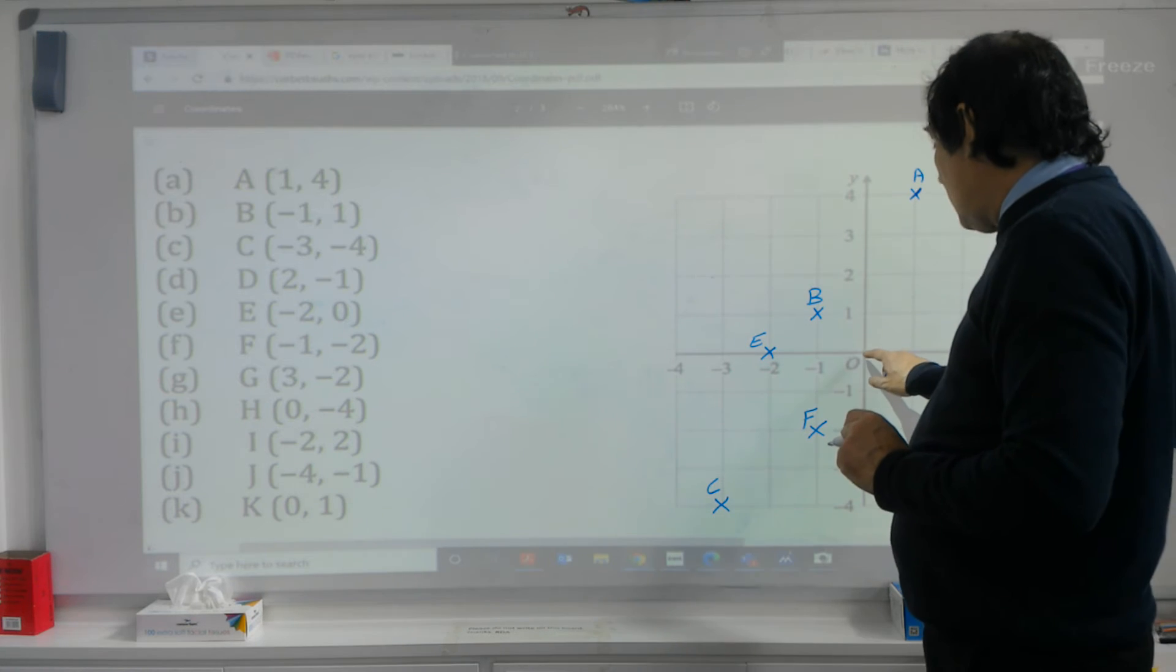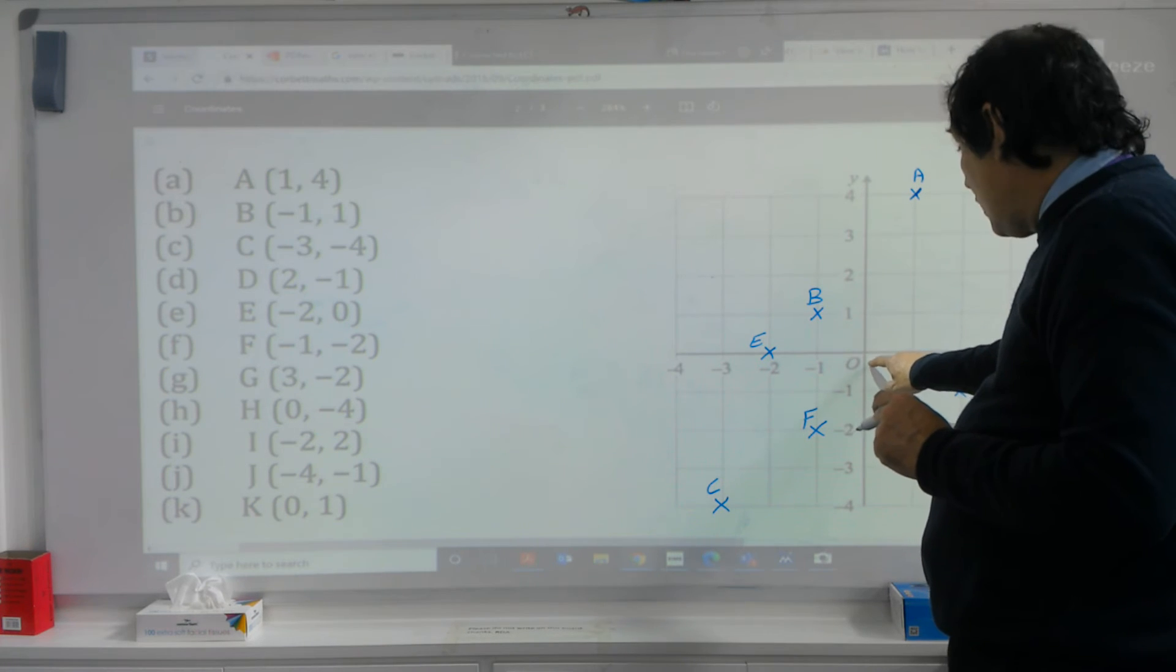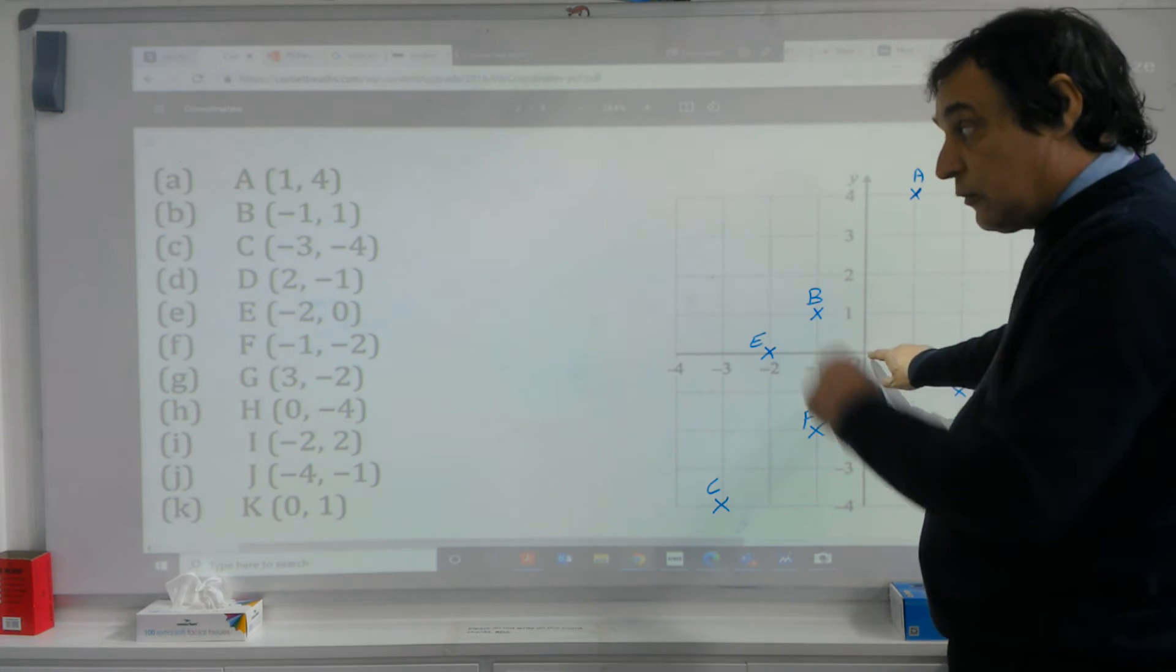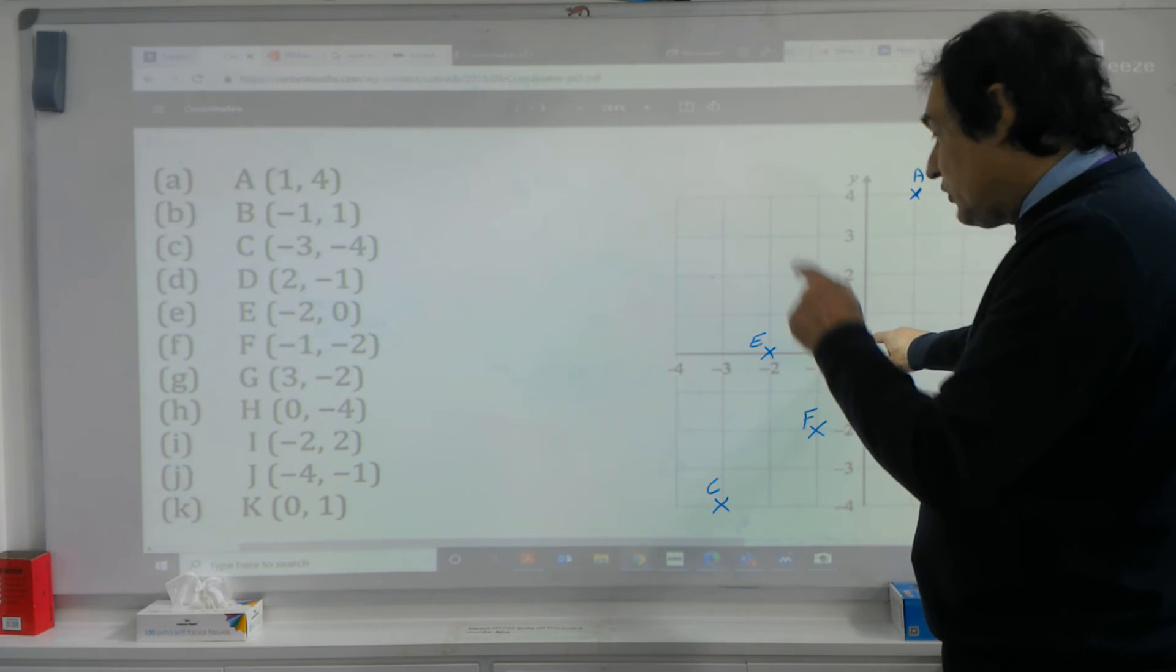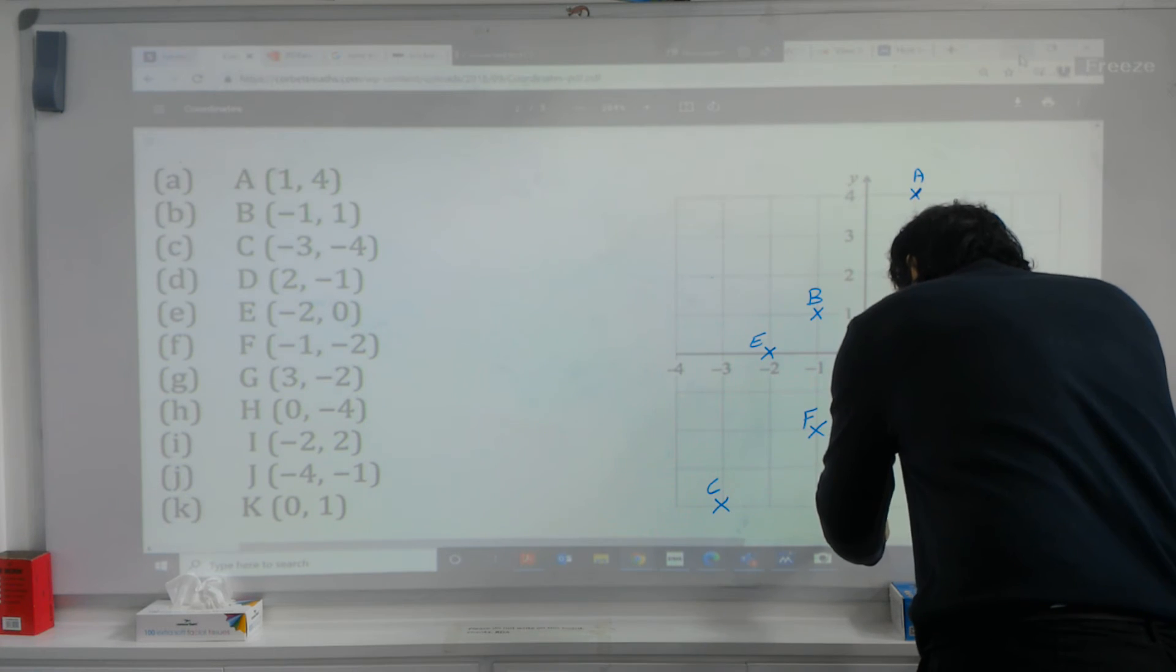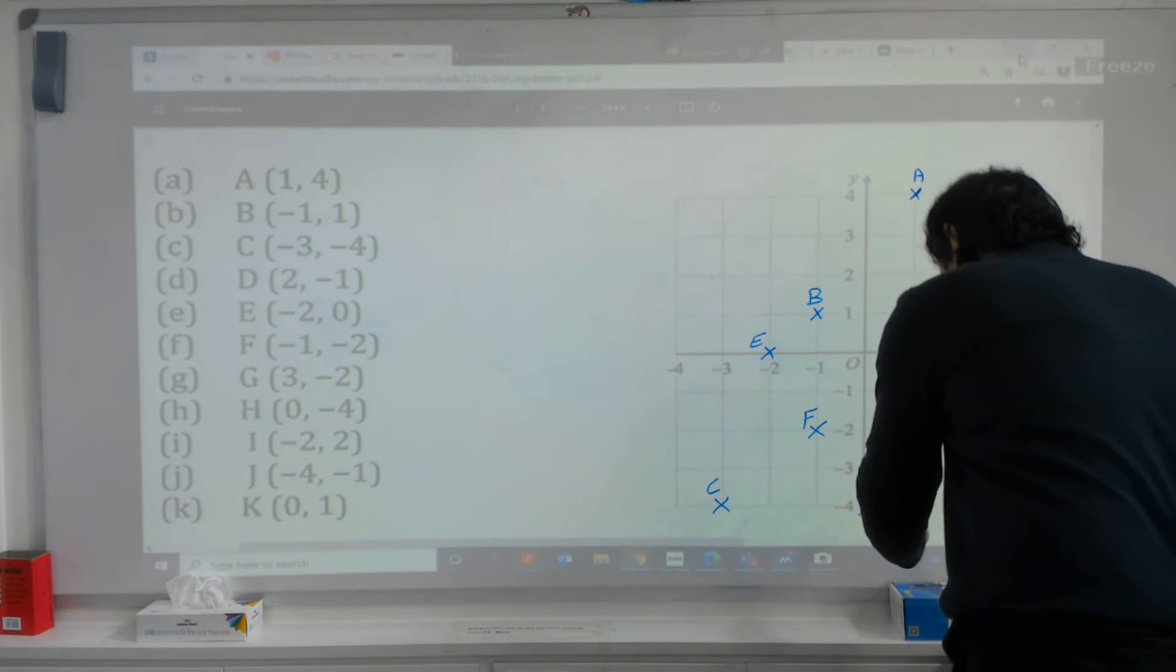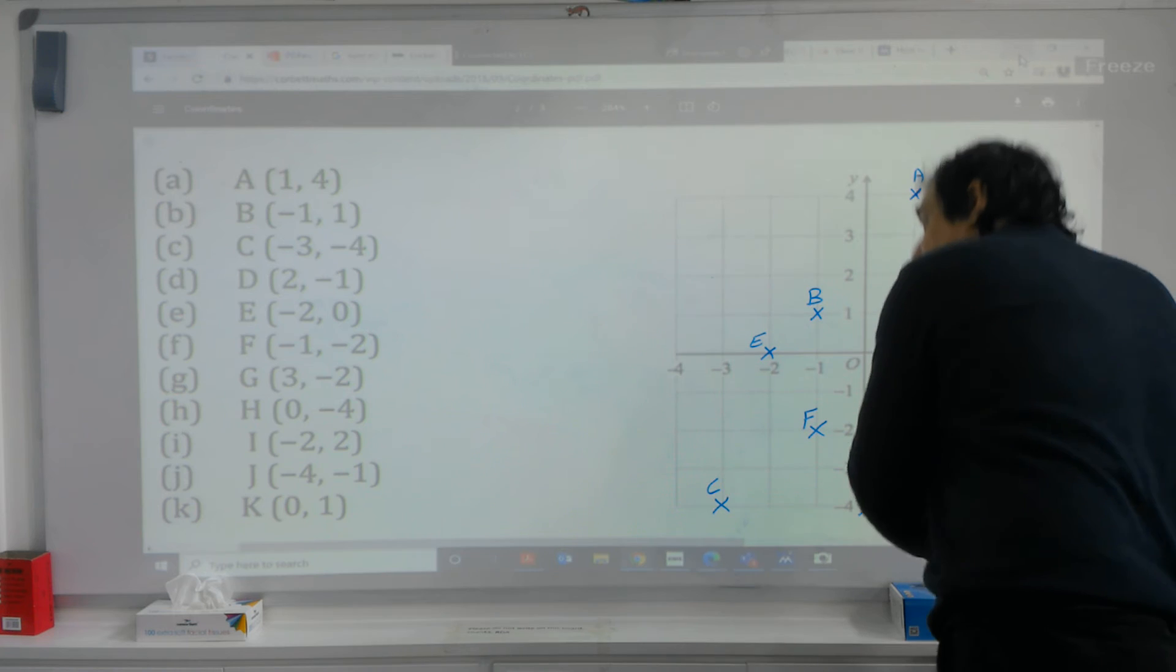H is going to be zero minus four. So we don't go across, because we've got a zero in our first left coordinate here, but we just go straight down four, so it sits on this axis here, and that is going to be H.